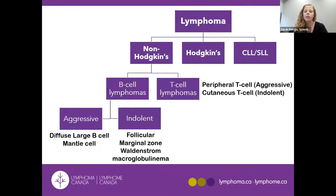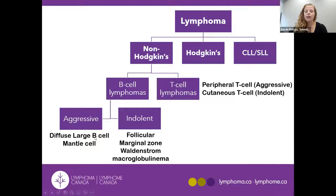This is a general classification of lymphomas: they can be generally classified as non-Hodgkin's, Hodgkin's, and CLL. Non-Hodgkin's lymphoma can be further subdivided into B cell lymphomas or T cell lymphomas, and further classified as aggressive or indolent. Some of the breakout sessions later today will cover specific subtypes including diffuse large B cell, mantle cell, follicular, marginal zone, Waldenstrom's macroglobulinemia, peripheral T cell, cutaneous T cell, as well as Hodgkin's and CLL.